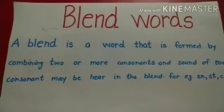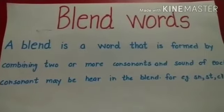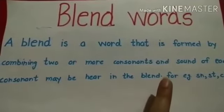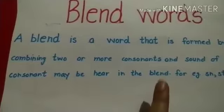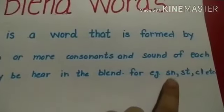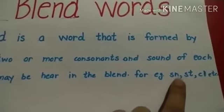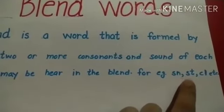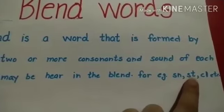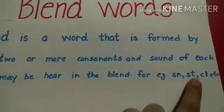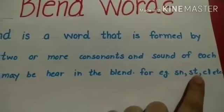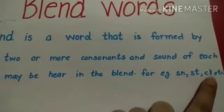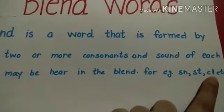Blend kya hota hai? Blend ek aisa shabd hota hai jo do ya usse zyada consonants ko jod kar banaya jata hai. Aur har ek akshar ka sound us blend mein sunai deta hai. For example, 'snore' is a blend — S and N ko jod kar banaya gaya hai, aur snore mein S aur N dono ka sound sunai deta hai. 'Stir' bhi ek blend hai — it is made by joining S and T. 'Clear' is made by joining C and L, and both sounds are heard.